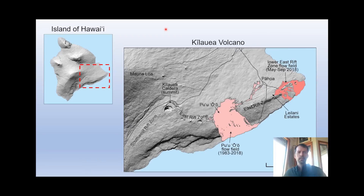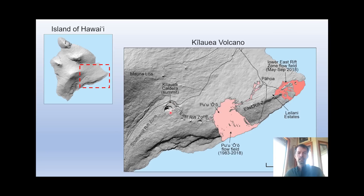Here's a map overview - here's the island of Hawaii, also known as the Big Island, and Kilauea Volcano is in the southeast portion within this box. Zoomed in, the structure of the volcano has a summit caldera and two rift zones: the southwest rift zone and the east rift zone. What I'll be talking about today are eruptions in three basic locations: the summit caldera, the middle east rift zone where the Pu'u 'Ō'ō eruption began in 1983 and went to 2018, and then the very destructive lower east rift zone eruption in Leilani Estates in 2018.